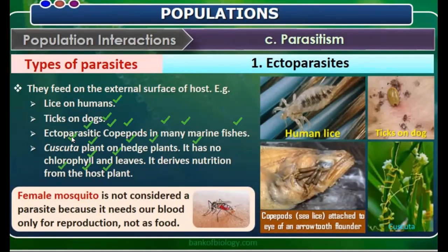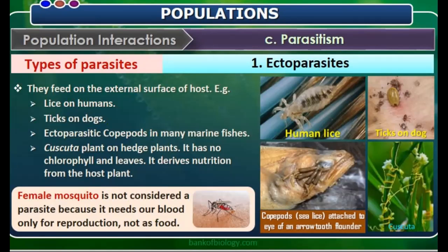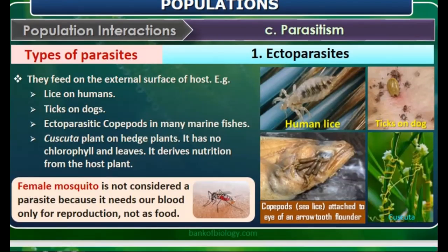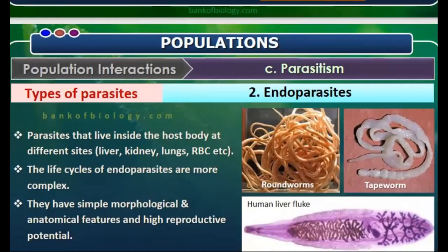Cuscuta plant is actually a full parasite because it is dependent on the host for both habitat and nutrition. Some plants are only partially dependent on photosynthesis. Mosquitoes are not considered parasites because they need our blood only for reproduction and not as food, though of course they do bother us.